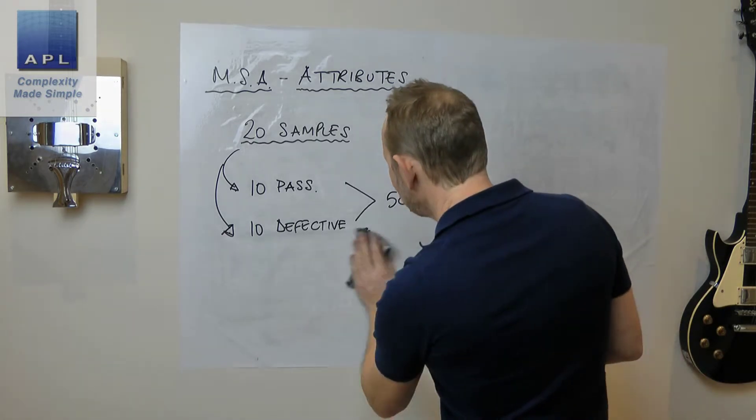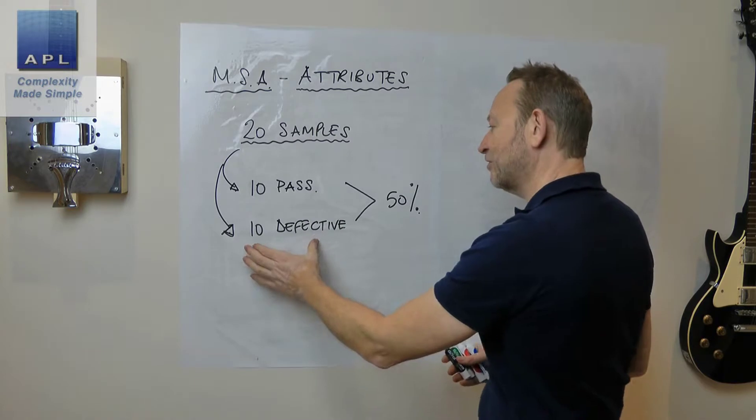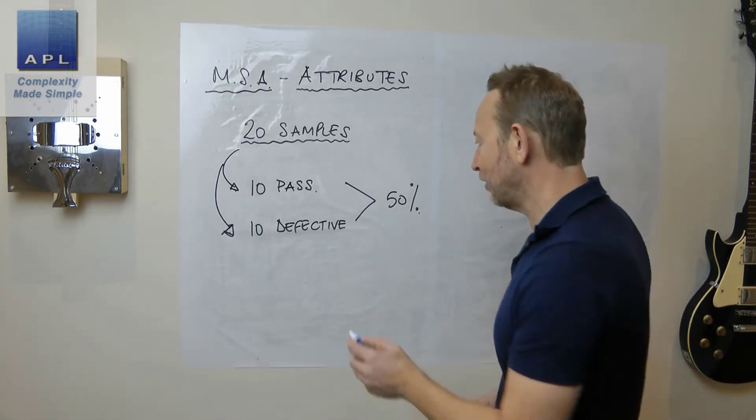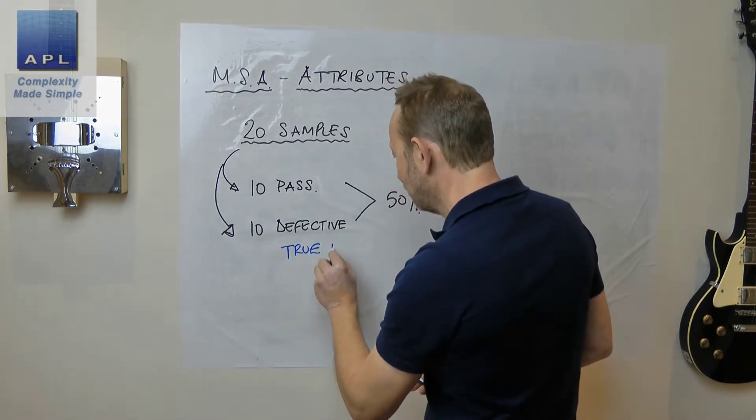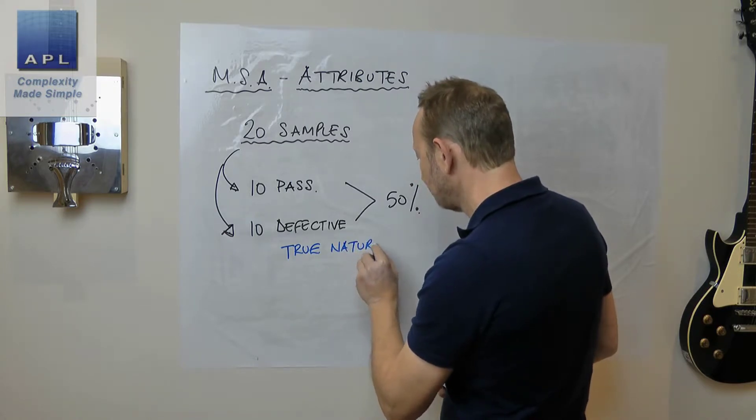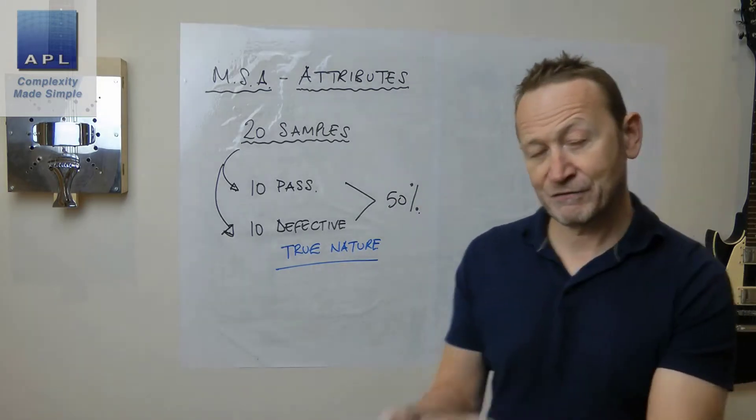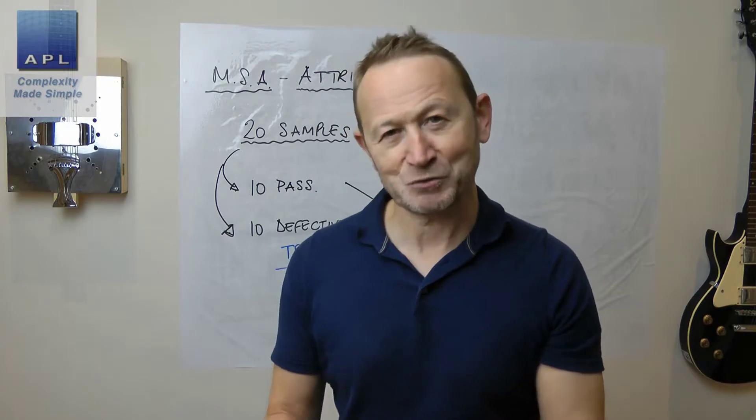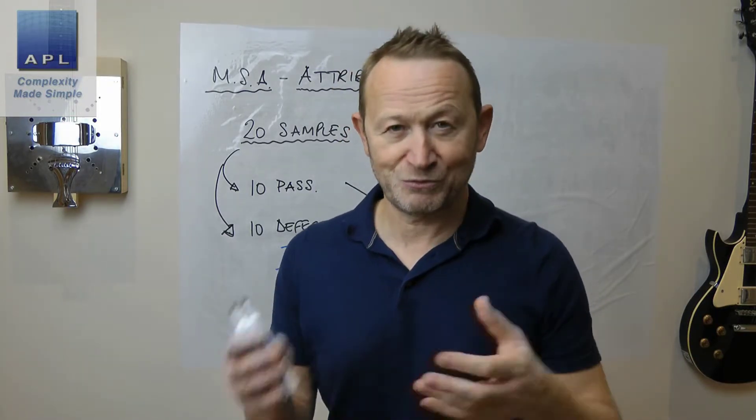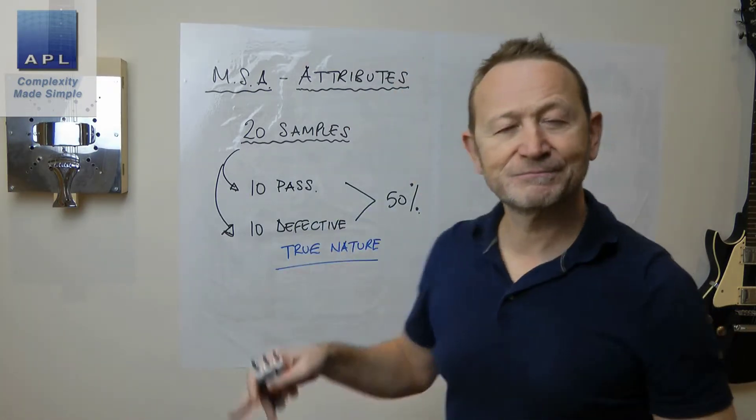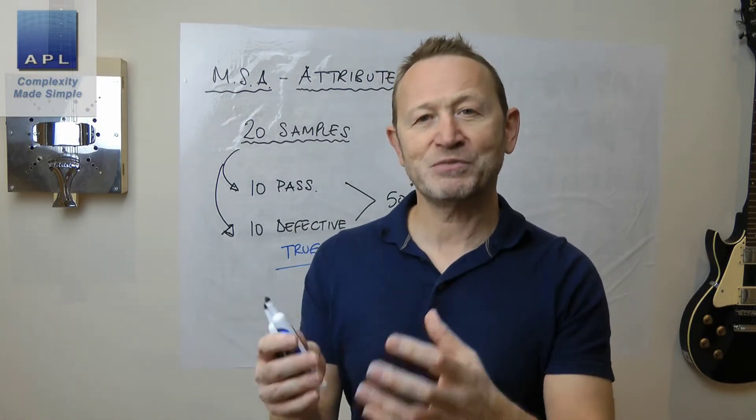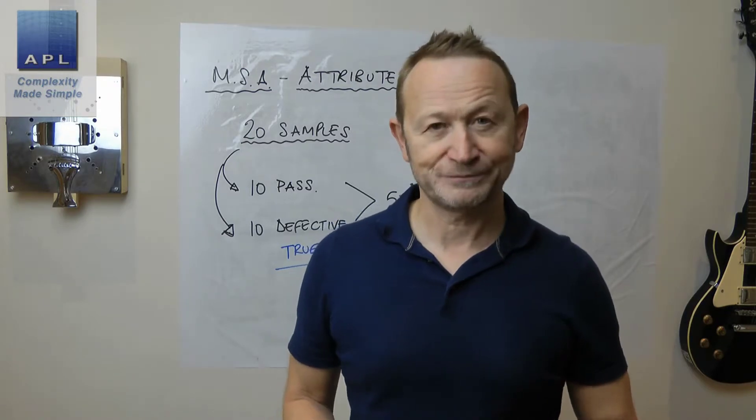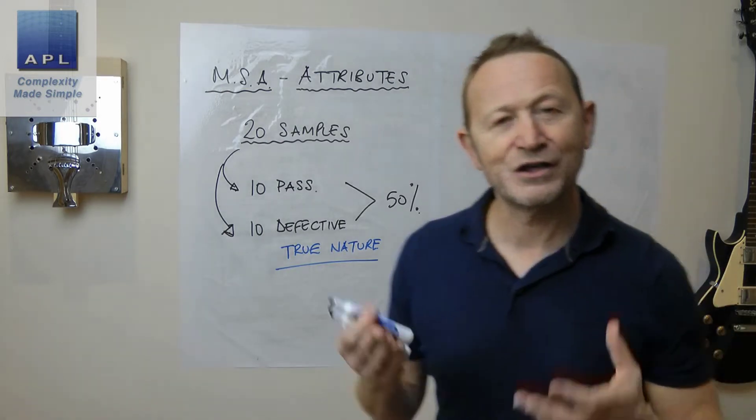So in order not to create a bias in the statistics, what we're going to do is we're going to make sure that we have 10 that pass and 10 that are defective. Now, what this also means is that someone has to decide the true nature. So some expert has decided the true nature of these samples. That's not something that we do in variable MSA. There is no real size for a part. But there is a real state for these parts. So someone in the company has to be the holder of the standard. And they've assessed the 10 that pass and the 10 that fail. So that's really important that it's 50-50 when you set them up.